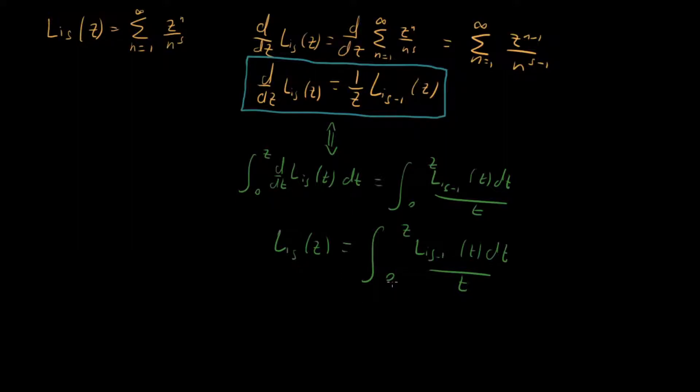And then, so this right here is already an interesting integral property, but if we wanted to, what I'm going to do is I'm going to shift s by one, up by one in both cases. So if you shift s up by one, then you get Li s plus 1 of z equals same integral, just Li sub s of t dt over t.